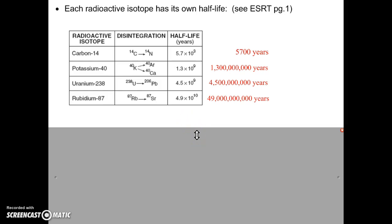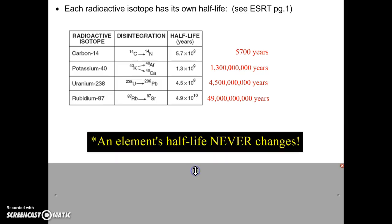What's key about these half-lives is that half-lives never, ever change. Carbon-14 will always take 5,700 years to go through a half-life. It doesn't matter what you do to it. You can heat it. You can cool it. You can crush it. You can cut it in half. It doesn't matter what you do. The half-life will always stay the same. And that is the key to using this process.